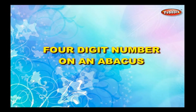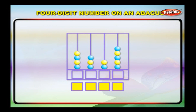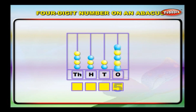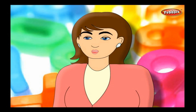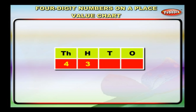Four-digit number on an abacus. Let us read about four-digit numbers with the help of an abacus. Count the number of beads in the spikes that show ones, tens, hundreds, and thousands respectively. We have five beads in the ones column, two beads in the tens column, three beads in the hundreds column, and four beads in the thousands column. The same numerals may be written in the place value chart as 4,325.